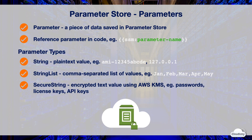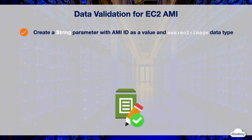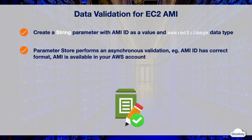Parameter Store provides data validation support for Amazon EC2 instances. You can create a String parameter with an EC2 AMI ID as a value using the AWS EC2 Image data type. Parameter Store performs an asynchronous validation to ensure that the parameter value meets certain requirements — for example, that an AMI ID has the correct format and is available in your AWS account.